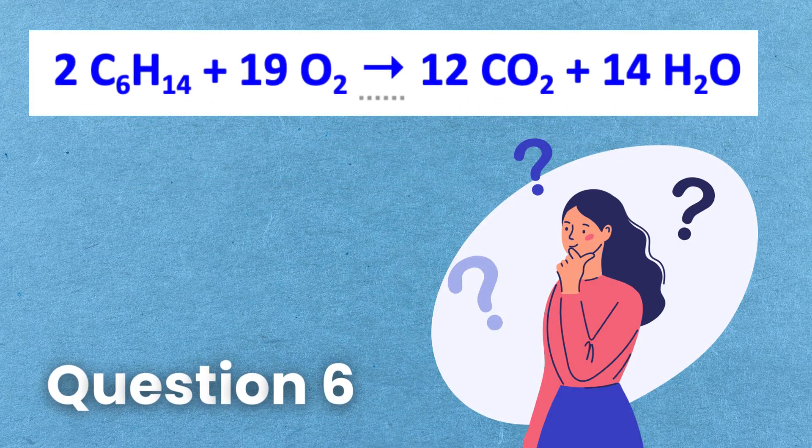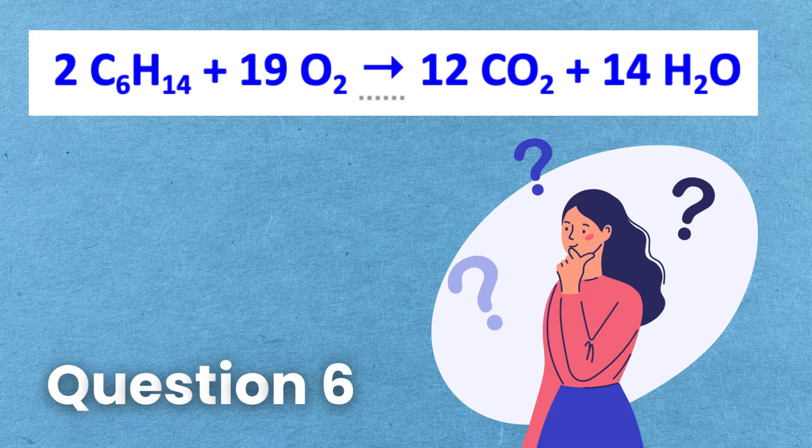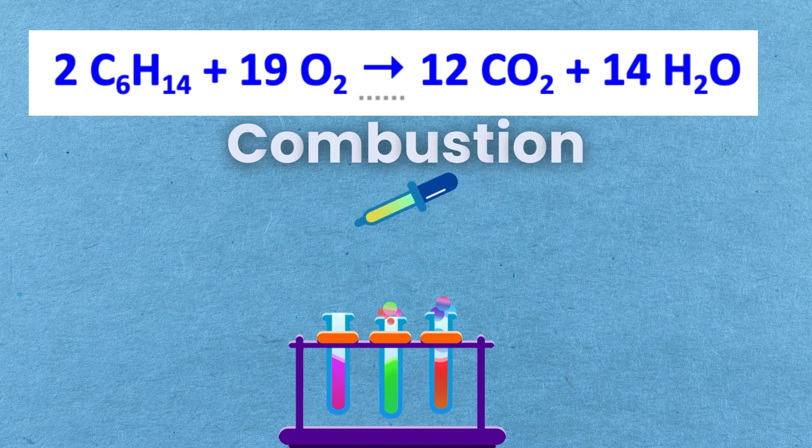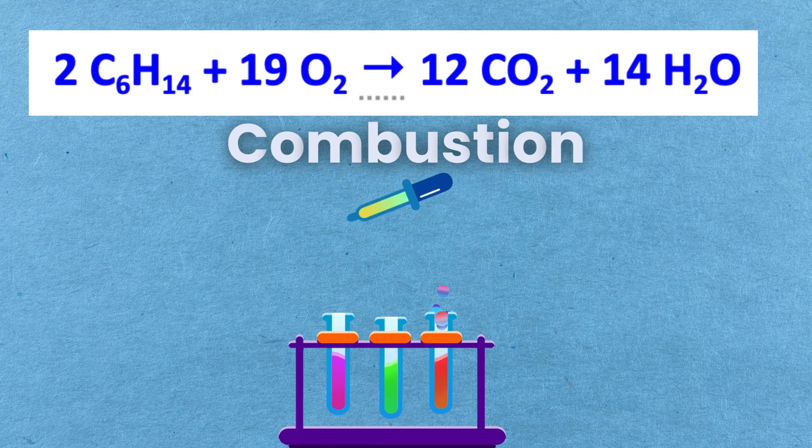2C6H14 plus 19O2 gives 12CO2 plus 14H2O. In this reaction, hexane reacts with oxygen gas to produce carbon dioxide and water vapor. So, it is a combustion reaction.